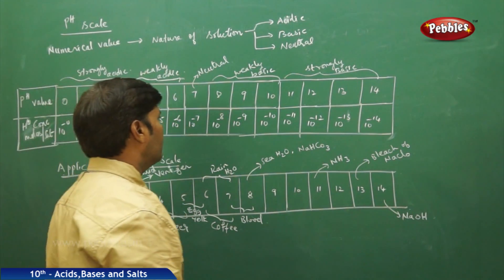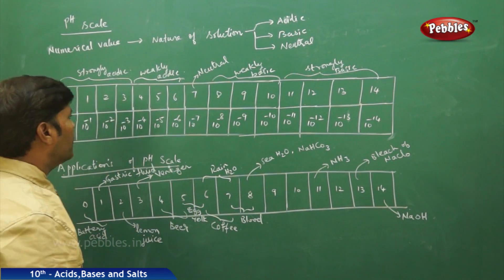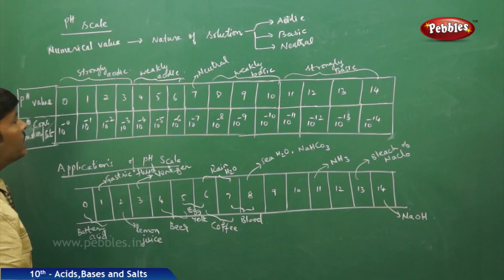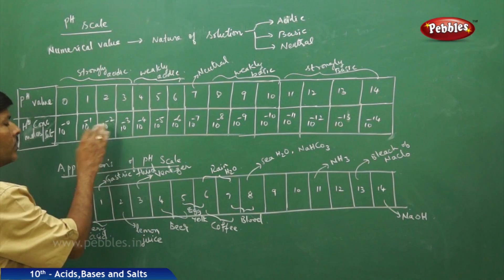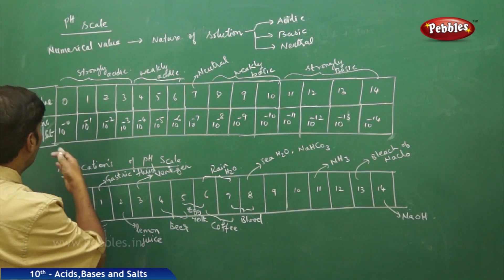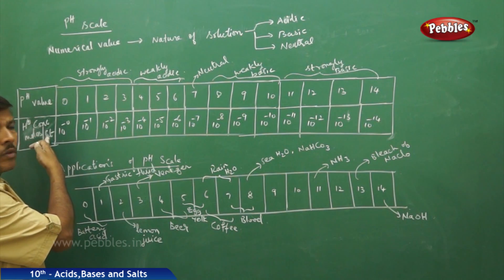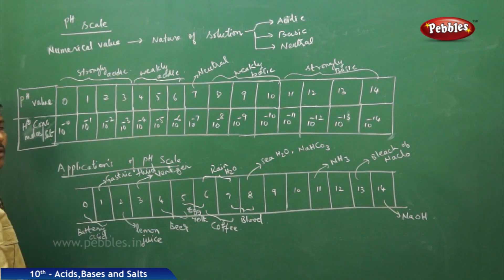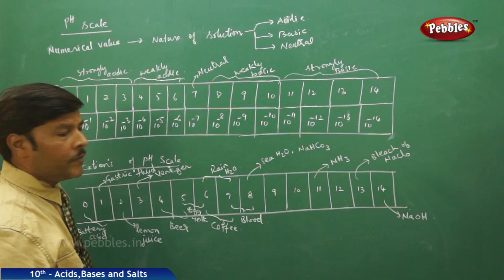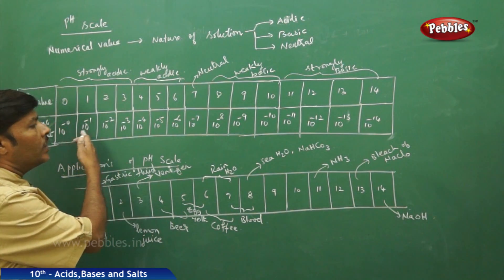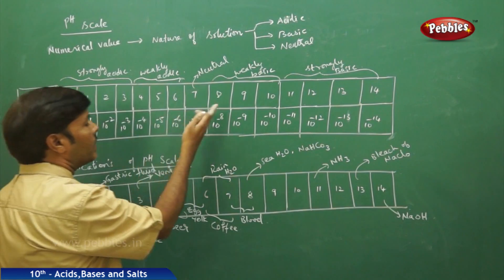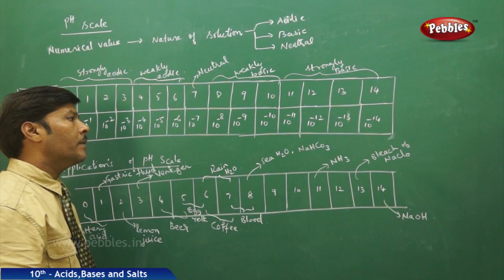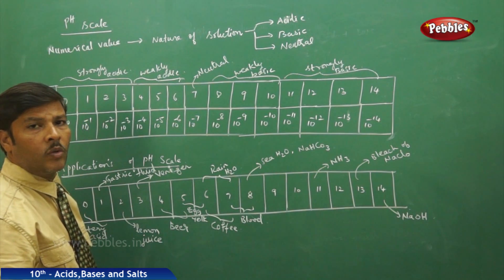From this table, you can observe that the first row gives the pH scale from 0 to 14. The second row shows the H+ ion concentration of acidic, basic, and neutral solutions expressed in moles per liter. The H+ ion concentration gradually decreases as the pH value increases.